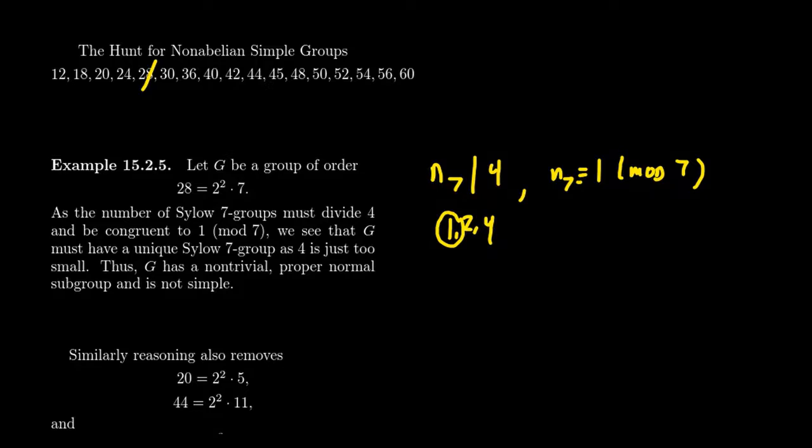It is also true that we can remove 20 for the same reasoning. If you consider a Sylow 5 subgroup, your options are 1, 2, and 4, but the only one that's congruent to 1 mod 5 would be 1. So groups of order 20 have a unique Sylow 5 subgroup. And by similar reasoning, we get that 44, which is 4 times 11, because 4 is too small, we get that there's going to only be one 11 subgroup of 44. So that Sylow subgroup necessarily has to be normal. So we can remove 20 from our list, and we can remove 44 from our list as well.